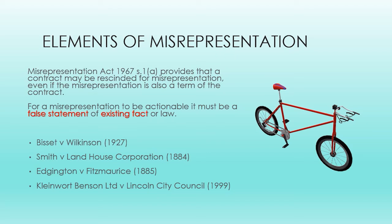Let us explore the above possible misrepresentations through a list of examples. If Yorgos buys John's bicycle after being told that it is a mountain bike and it turns out to be a street bike, would we have a claim for misrepresentation? The answer would be yes, as a false statement of fact was made that induced John to enter into the contract. If, on the other hand, Yorgos told John that he thinks this is a great bike, this is unlikely to be sufficient basis for a finding of misrepresentation as it sounds like a statement of opinion.